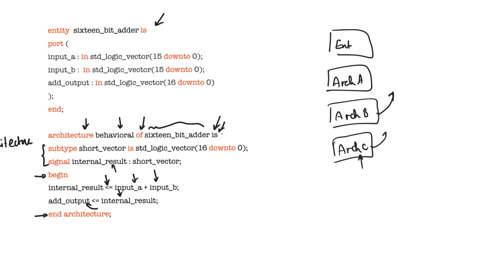To reiterate: when you declare an entity, you are not talking about how many times you use it or how it's implemented on the inside — you're just talking about the input and output ports and the name of the entity. The implementation on the inside is described by the architecture, of which there has to be at least one.